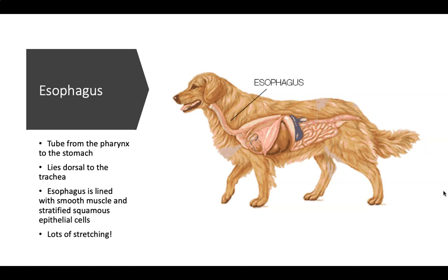Once food passes the pharynx, it diverts away from the larynx and works its way down the esophagus. The esophagus is a muscular tube from the pharynx to the stomach. It lies dorsal to the trachea. The esophagus is lined with smooth muscle and stratified squamous epithelial cells — multiple layers — giving it the capacity for significant stretching to accommodate food.